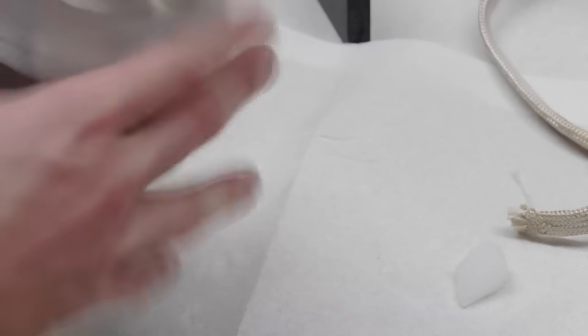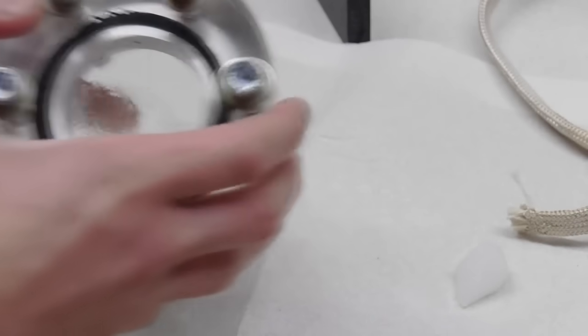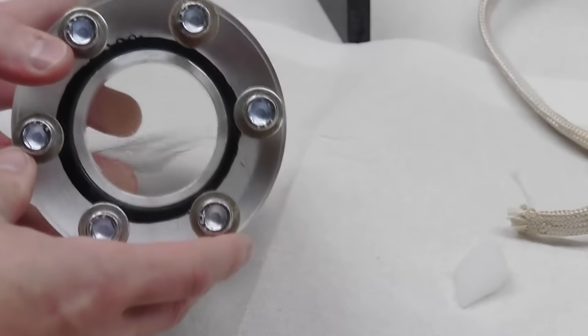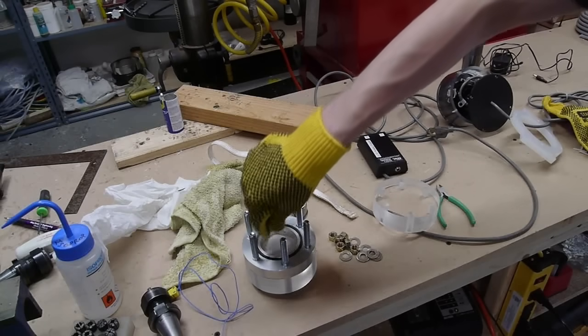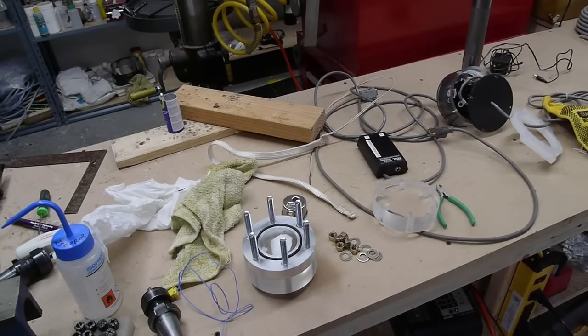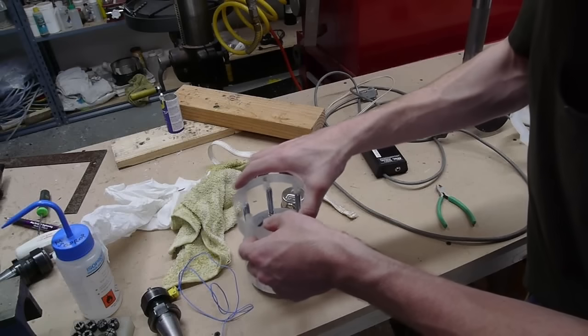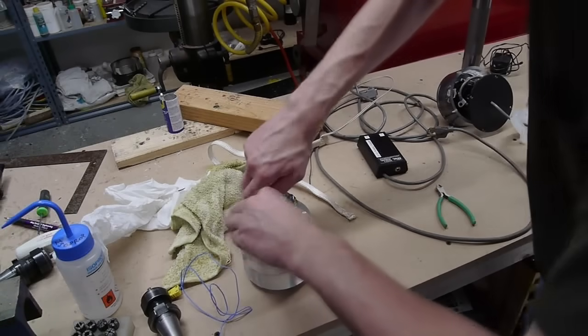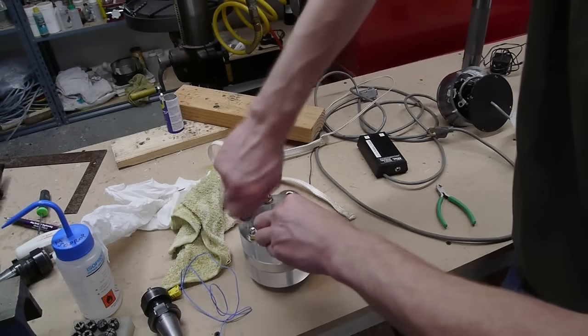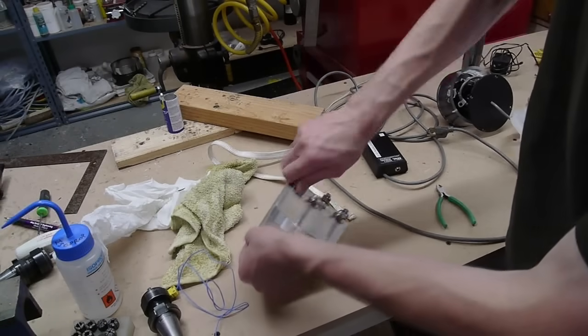One interesting problem that I ran into is that there's no valve on this chamber. So what I do to fill it is just put half of it together, drop a few pieces of dry ice in there and then screw the other side down. But this ends up being a problem because the pressure builds before I have time to actually get the chamber sealed up to the proper torque.